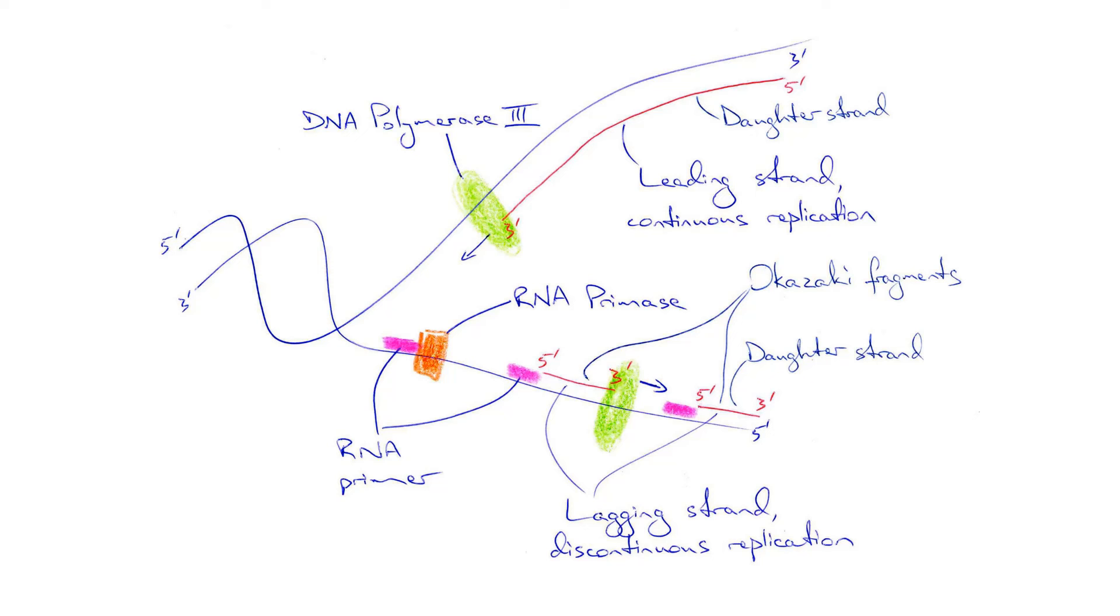This solution needs to be repeated again and again, leading to a number of small fragments of daughter strand being formed. These fragments are called Okazaki fragments. This daughter strand is called the lagging strand and because it is synthesized in pieces, the replication is referred to as discontinuous replication.